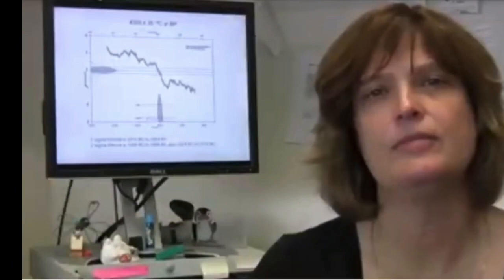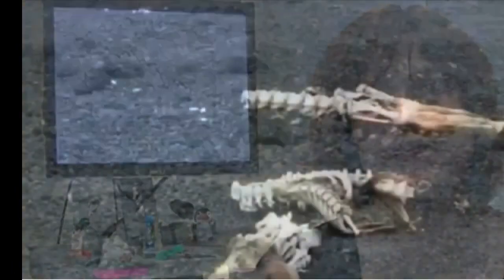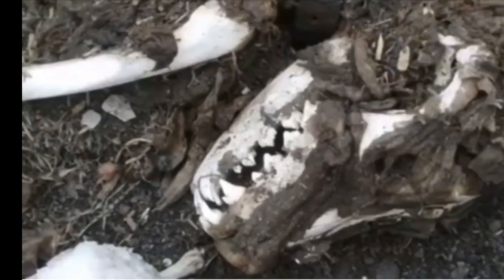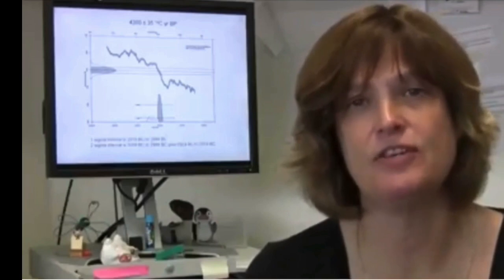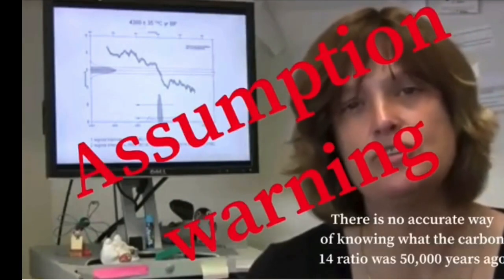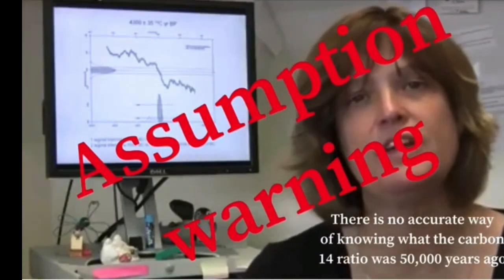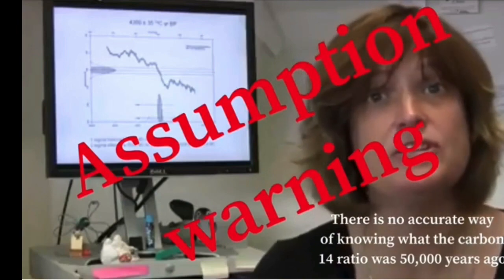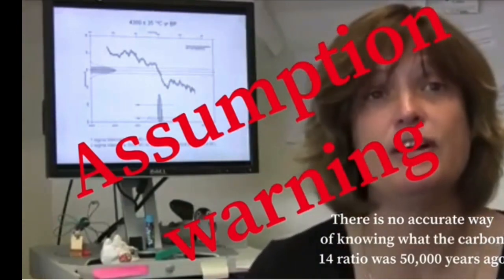When an organism dies, it's no longer taking in any new carbon, so at that point the carbon 14 in the organism begins to decay away. That's kind of like the start of the stopwatch for radiocarbon dating. If we can accurately and precisely measure how much C14 is in our sample now, we know how much should have been in the sample when it was alive, we can then use an equation to calculate how much time has passed since that organism was alive, and that's radiocarbon dating.